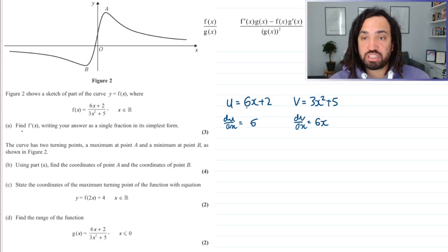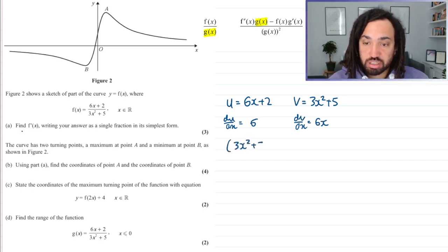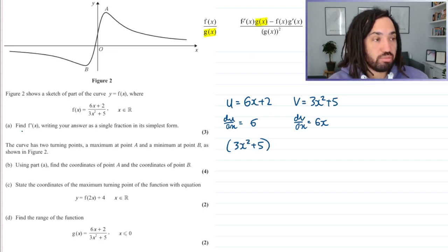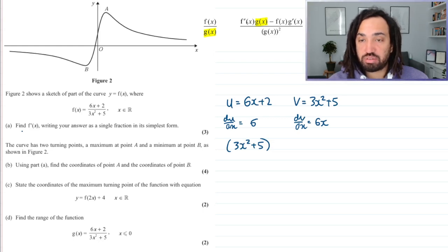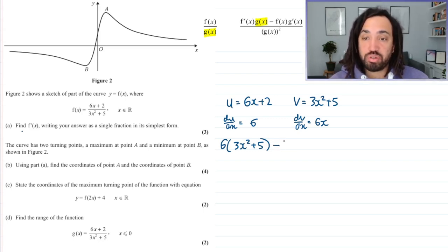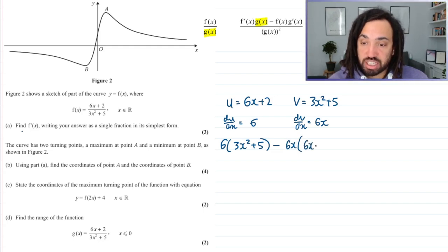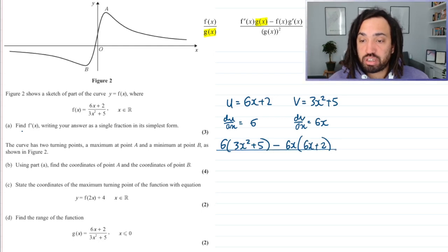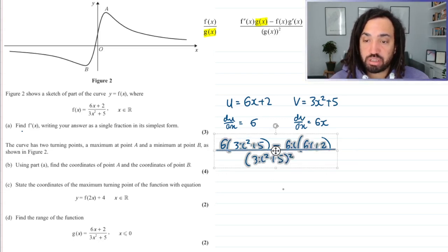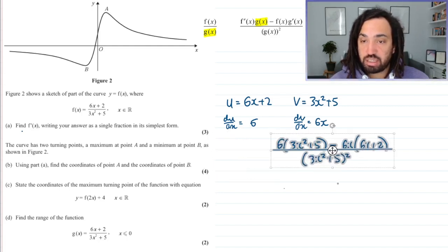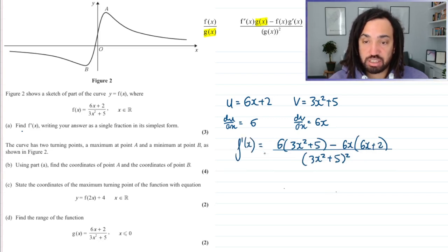The formula states that we start with v. So v is the one on the bottom, so that's where I'm going to start. I write out v which is 3x squared plus 5 and then we times it by the u dash or the numerator derivative which is 6. Then always a minus and then we do the other way round, so we do u times by v dash. This will be 6x is v dash multiplied by 6x plus 2 is u, and then that is all over v squared which is 3x squared plus 5 all squared. So that is f dash of x.